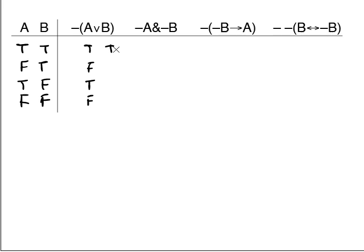So underneath B, we're going to write true, true, false, false. This is a step that you may want to skip after you get more comfortable with the method. But to begin with, just rewrite the guide columns underneath the sentence letters.